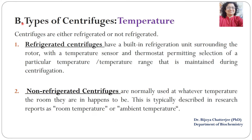The second classification is based on temperature. A centrifuge can be refrigerated or non-refrigerated. Refrigerated centrifuges have an inbuilt unit surrounding the rotor with a temperature sensor and thermostat, allowing selection of a required temperature range. Very high speed or ultracentrifuges are generally refrigerated. Non-refrigerated centrifuges are used at room temperature, described in research reports as ambient temperature.